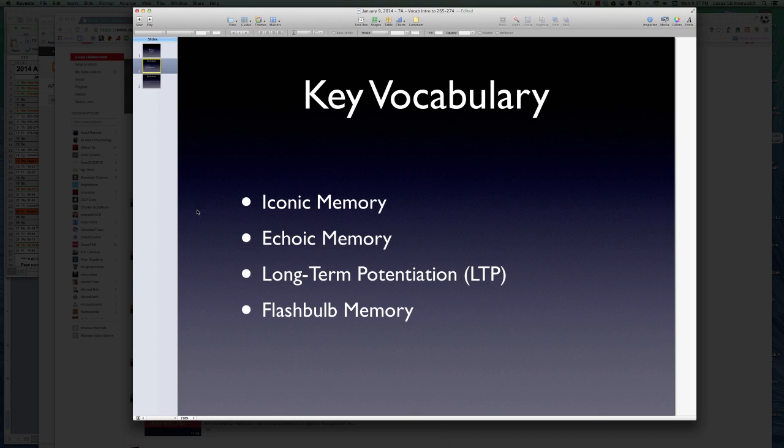We've got iconic and echoic memory. Iconic memories are memories that we see. Something visual, it's like a picture memory.